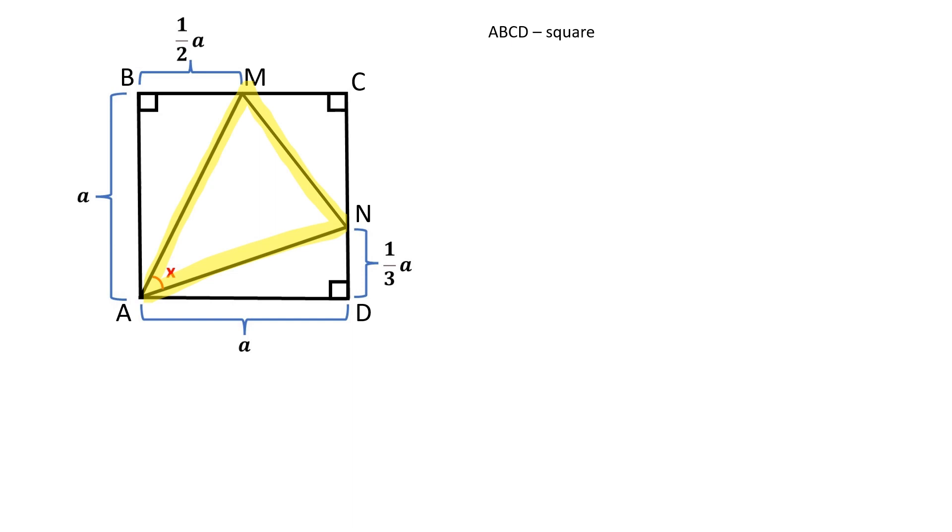Let's find all three sides of the triangle AMN. In the triangle ABM, AM is the hypotenuse. We can find it by using the Pythagorean theorem. AM is equal to square root of 5A squared over 4.